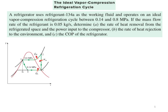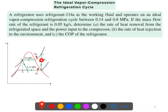This is an ideal vapor compression refrigeration cycle problem. A refrigerator uses refrigerant R-134a as the working fluid and operates on an ideal vapor compression refrigeration cycle between two pressures: 0.14 MPa and 0.8 MPa. The mass flow rate is given as 0.5 kg per second.